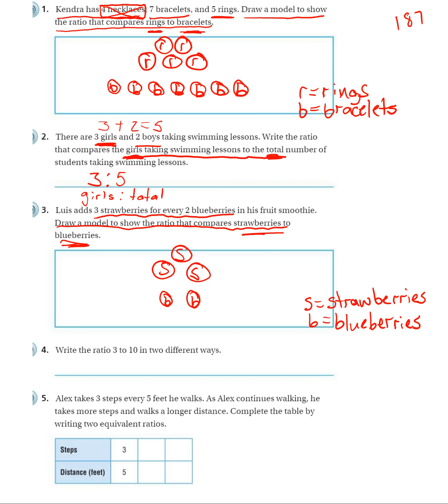Next one, write the ratio 3 to 10 in two different ways. So they wrote it using the word to. So I can write it with the colon, 3 to 10. And I can write it as a fraction.